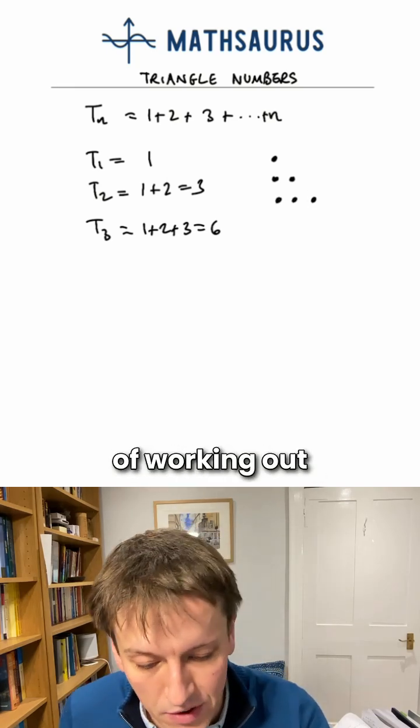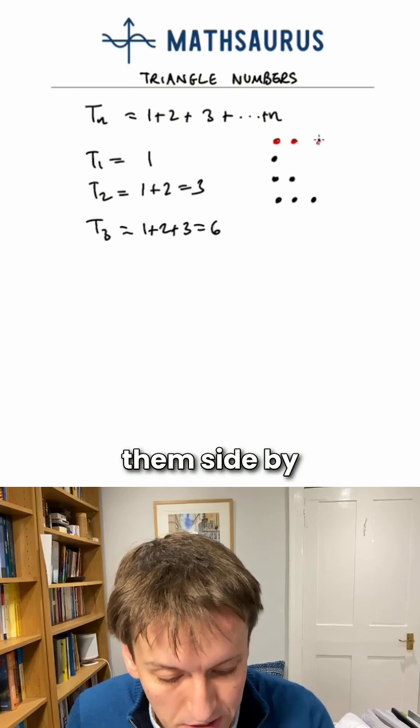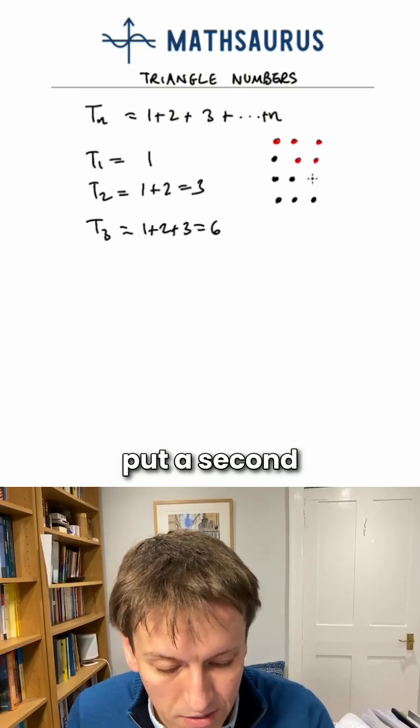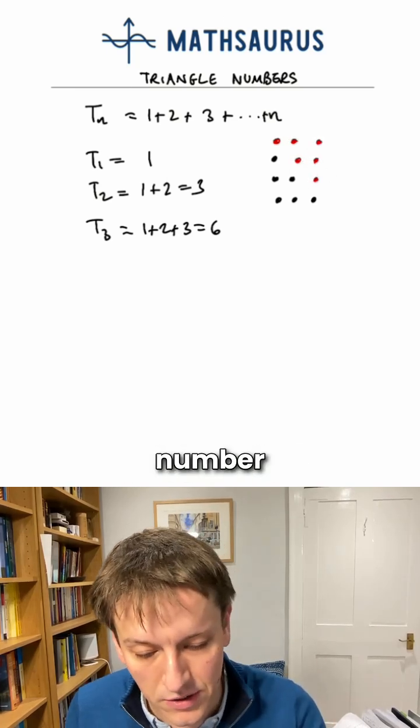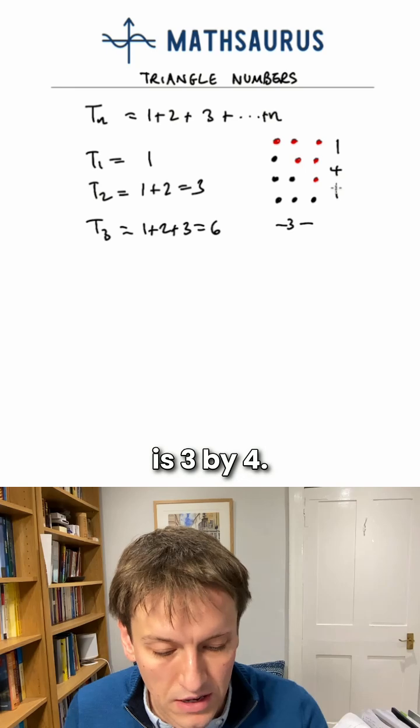Another way of working out the triangle numbers would involve putting two copies of them side by side. So if I put a second copy of that third triangle number here, we can see we get a rectangle that is 3 by 4.